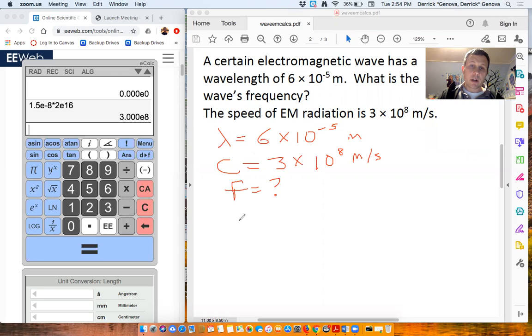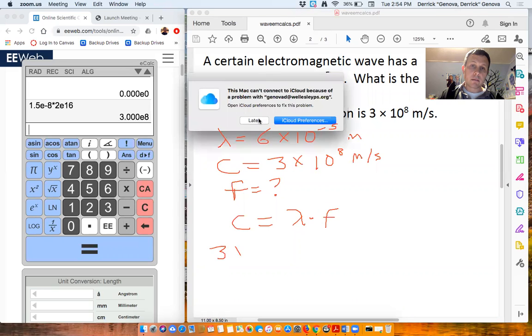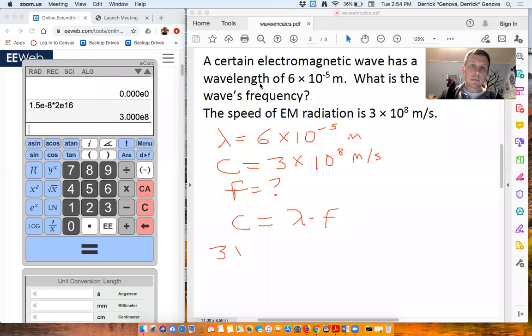So we're going to start with our equation. Our equation is c equals lambda times f. We're going to plug in what we know. I know c. c is 3 times 10 to the 8th. I know lambda is 6 times 10 to the negative 5. And I don't know f, so I'm going to leave it as is. And so now it's just a small algebra problem.